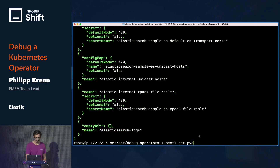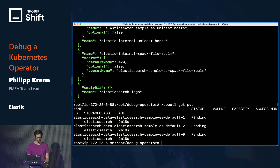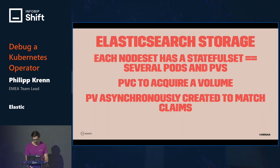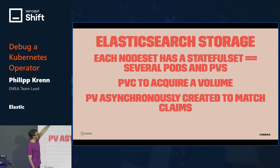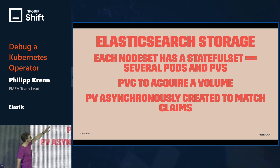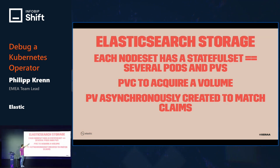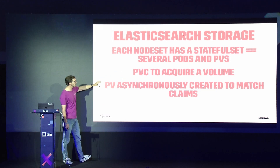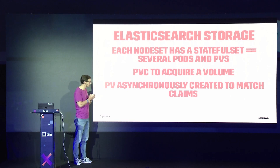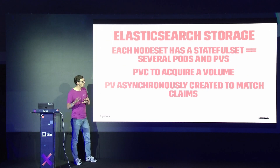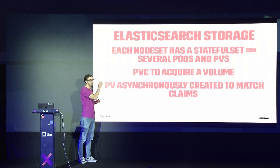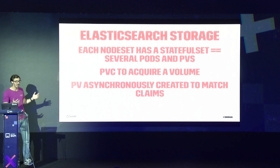Let's dig deeper into something called PVC or persistent volume claim. This is how storage works in Kubernetes. You can see there's something about these persistent volume claims that is pending. Every node set has a so-called stateful set — that is how you keep data in Kubernetes — and it consists of several pods and persistent volumes. To acquire a persistent volume you need a persistent volume claim, which is an asynchronous way to create the disk for your pods. This has all been failing because creating the persistent volume fails since the persistent volume claim is incorrectly configured. The pods start up, fail to get an actual persistent volume, and we are just stuck.